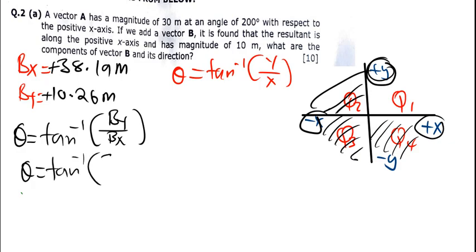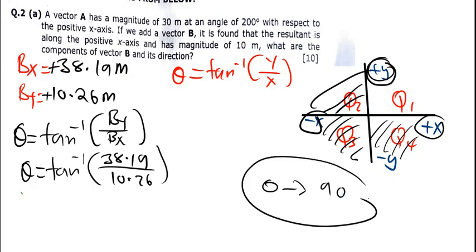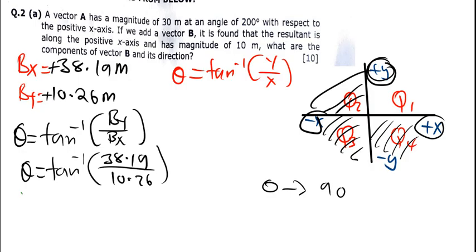So theta = tan⁻¹(By / Bx). By is 38.19 and Bx is 10.26. Since it's in the first quadrant, the angle should be between 0 and 90 degrees. Calculating: shift tan, open bracket, 38.19 divided by 10.26, close bracket.